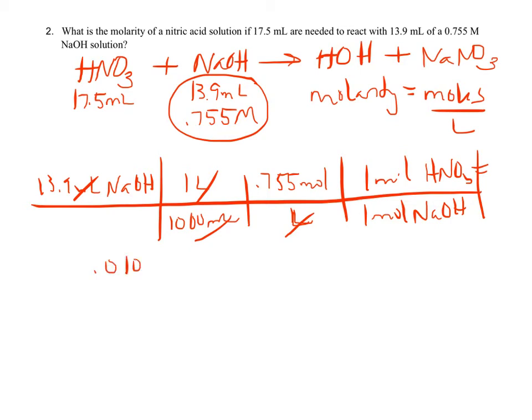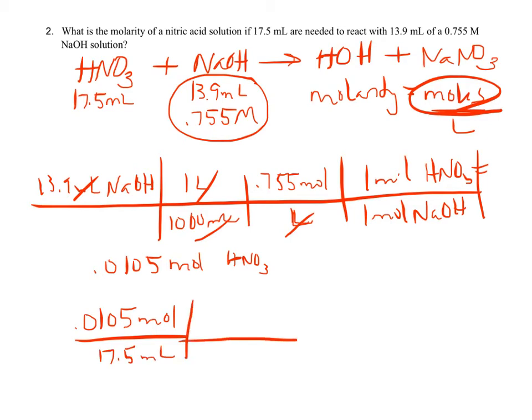When I calculate all of that out, I get 0.0105 moles of HNO3, and that's what I want to know the molarity of. So I already have the mole part of my relationship, I just need the volume part of that. So I'm going to put the moles over the volume of the HNO3. That's in milliliters, so I've got to get that out of there to get to liters. Cancel that, and that will give me a molarity of 0.600 molar, or moles per liter.